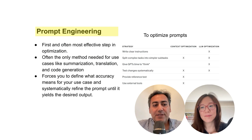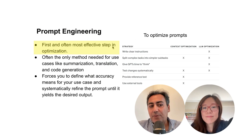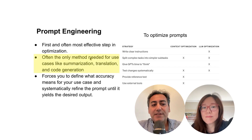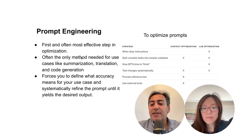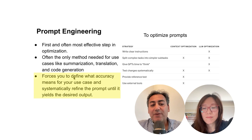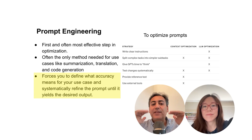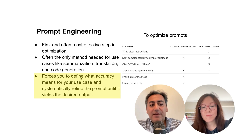Prompt engineering is the first and often most effective step in optimizing LLMs. For many use cases, it is often the only method required. For tasks like summarization, translation, and code generation, prompt engineering can take us far enough to get very good — even production-ready — accuracy. Prompt engineering also forces us to define what accuracy means, because the first step is to define what you expect, describe it in your prompt, and then refine from there.